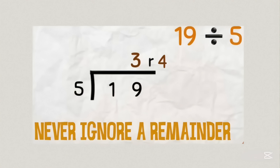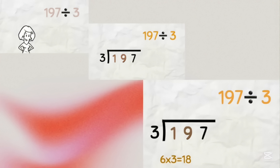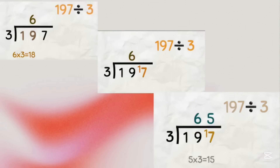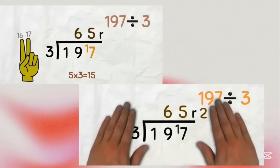Another one, a bit longer: 197 divided by 3. Set out with enough space between digits. There is no 3 in 1. So how many 3s in 19? If you know your 3 times table, 6 threes are 18 — put up the 6. Count on to 19 — that is a remainder of 1. Now how many 3s in 17? Five 3s are 15. Count on — 16, 17 — that is a remainder of 2, and we are done.